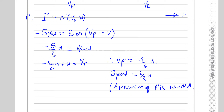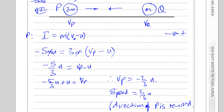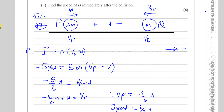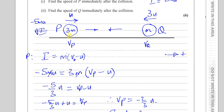Now we need to find the speed of Q immediately after the collision. We can use the change in momentum of Q equal to the impulse on Q. The impulse on Q is acting to the right — because P has hit Q, slowing it down or reversing it — so the impulse of P on Q is 5MU to the right, taking right as positive.